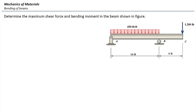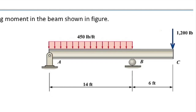First, we need to determine how much are the reaction forces in this problem. There are two supports on the left side, so we need to put two unknown forces here. I'm going to call these two unknown forces A sub Y, which is a reaction force of A in the Y direction, and A sub X. There is one reaction force at B because we have a roller support here. I'm going to call that B sub Y.